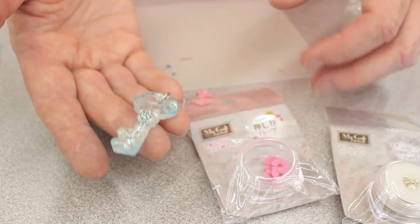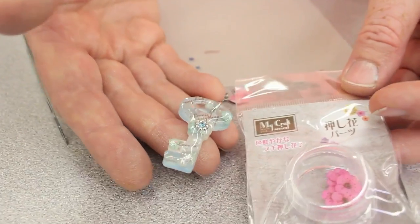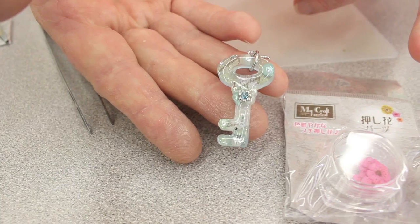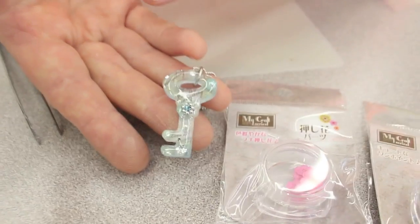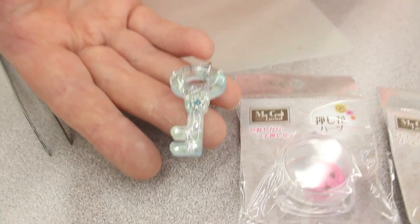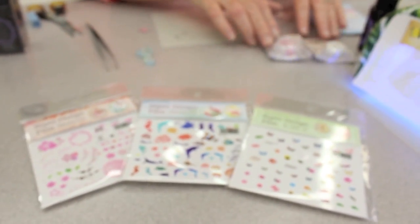They come in bows, butterflies, flowers. And then also, we have dried flowers that you could also incorporate within your resin. So many things to choose from that you can put inside. And our lamp is finished after the three minutes.